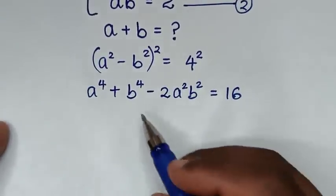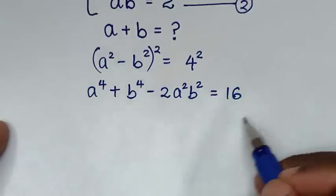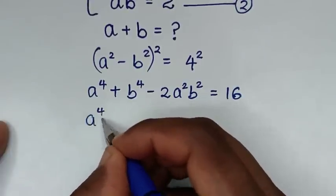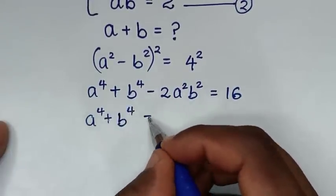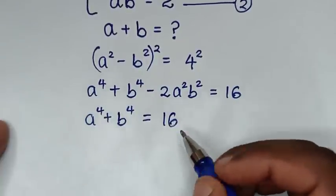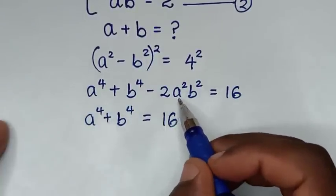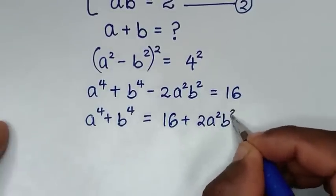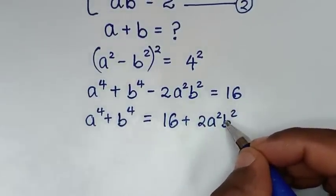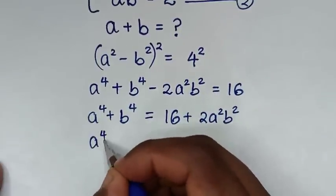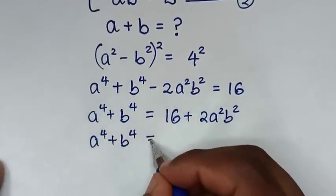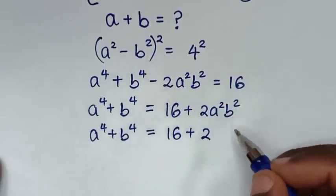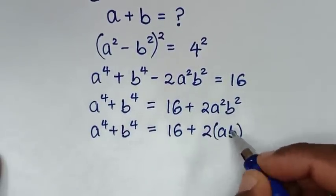In the next step, we move the minus 2a²b² to the other side, giving a⁴ plus b⁴ equals 16 plus 2a²b². Now 2a²b² is the same as 2(ab)², so we write it as 2(ab) squared.